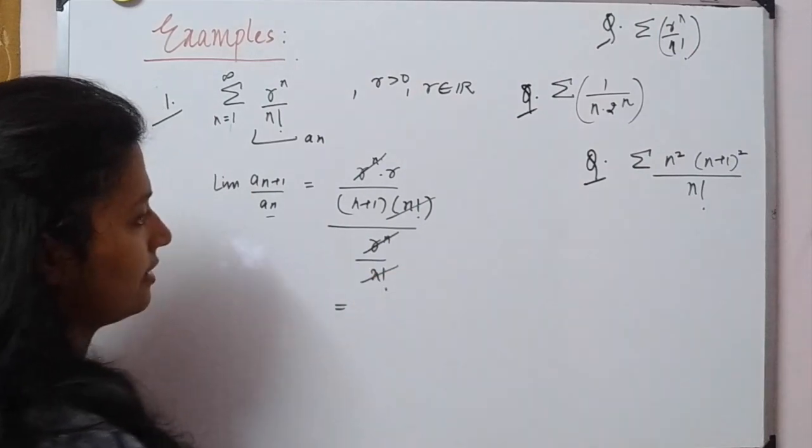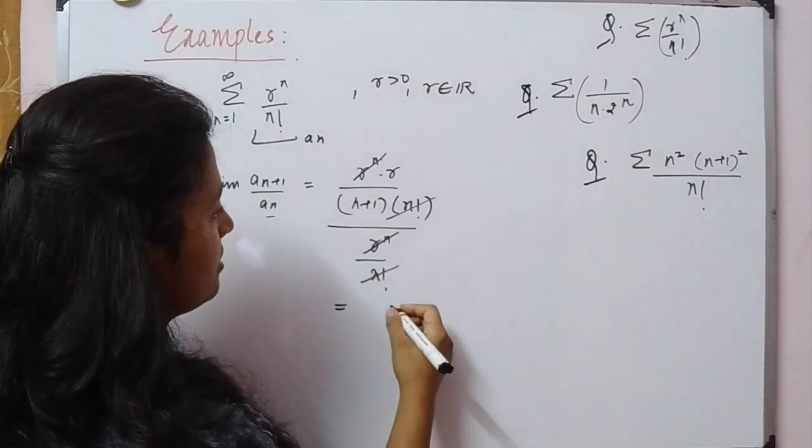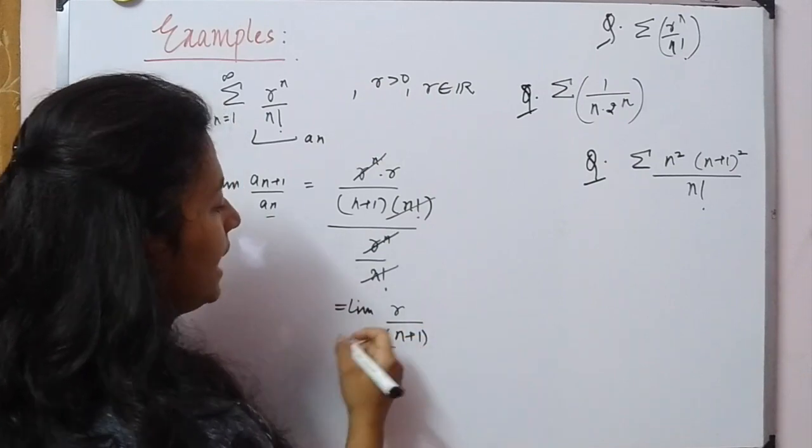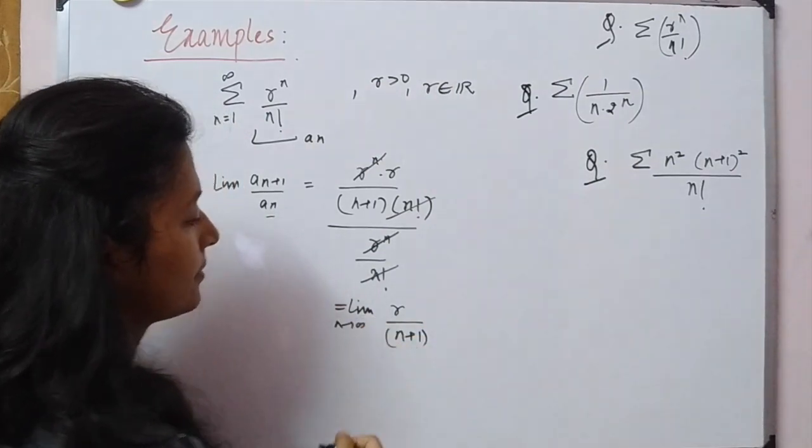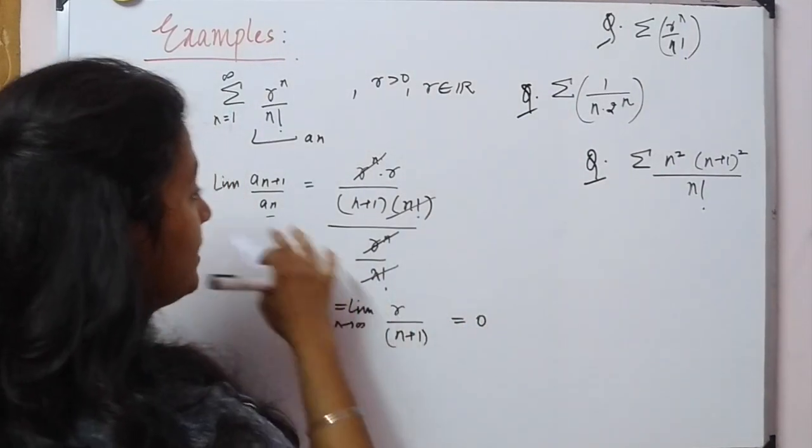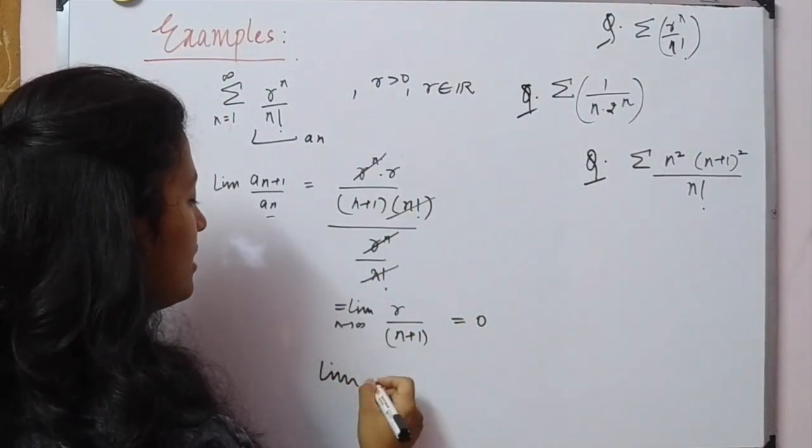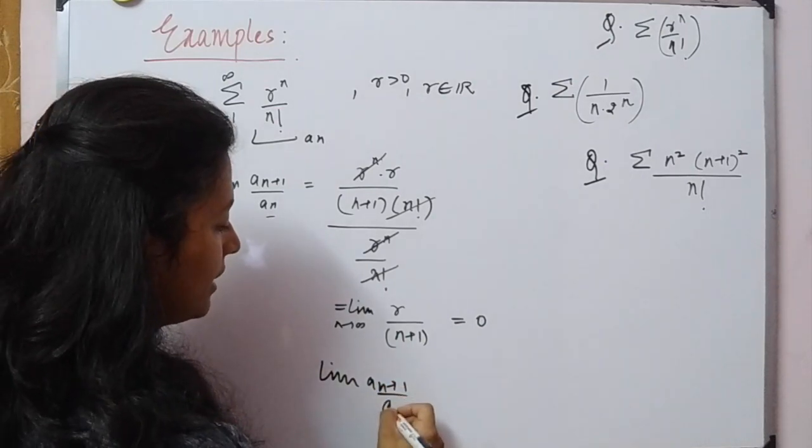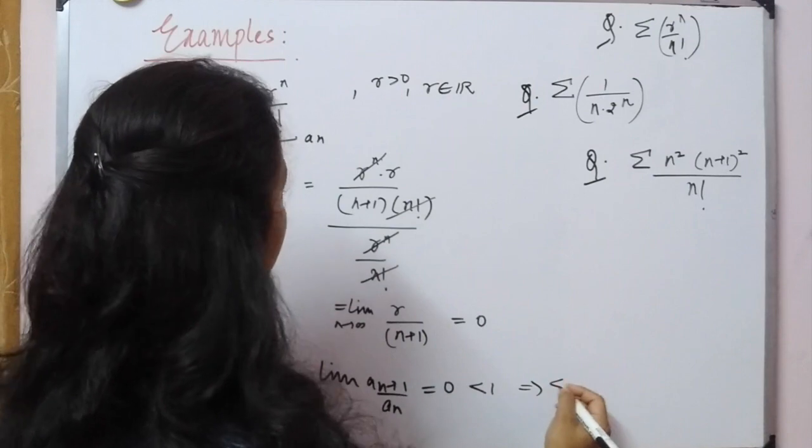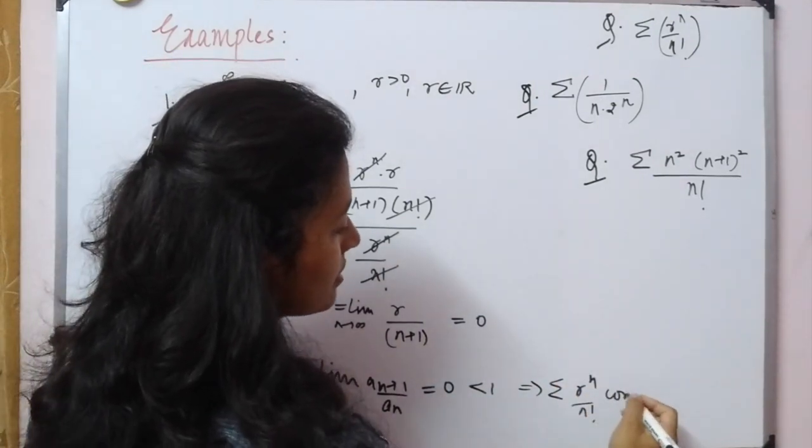What we're left with is r/(n+1). Taking limit as n tends to infinity, this term becomes 0. Hence we get lim(aₙ₊₁/aₙ) = 0, which is less than 1, which implies the given series converges.